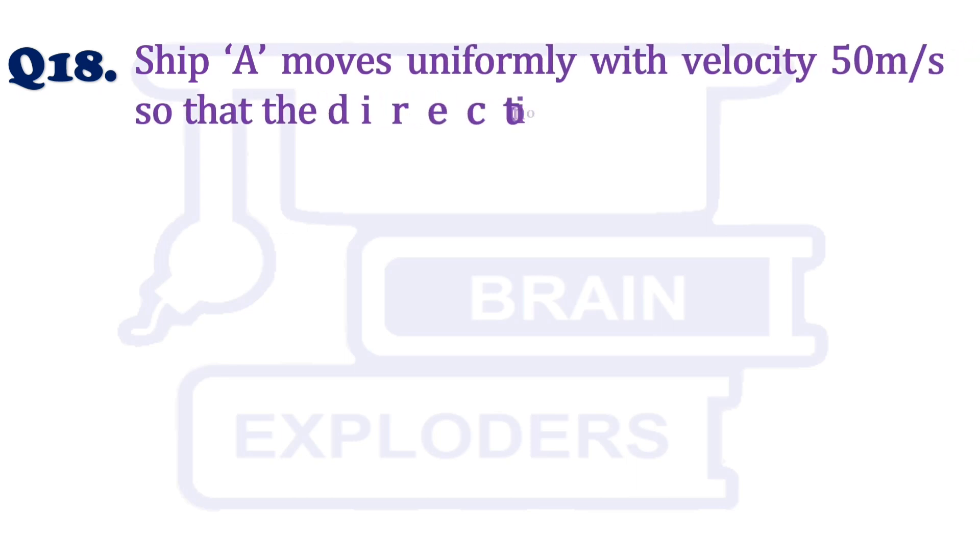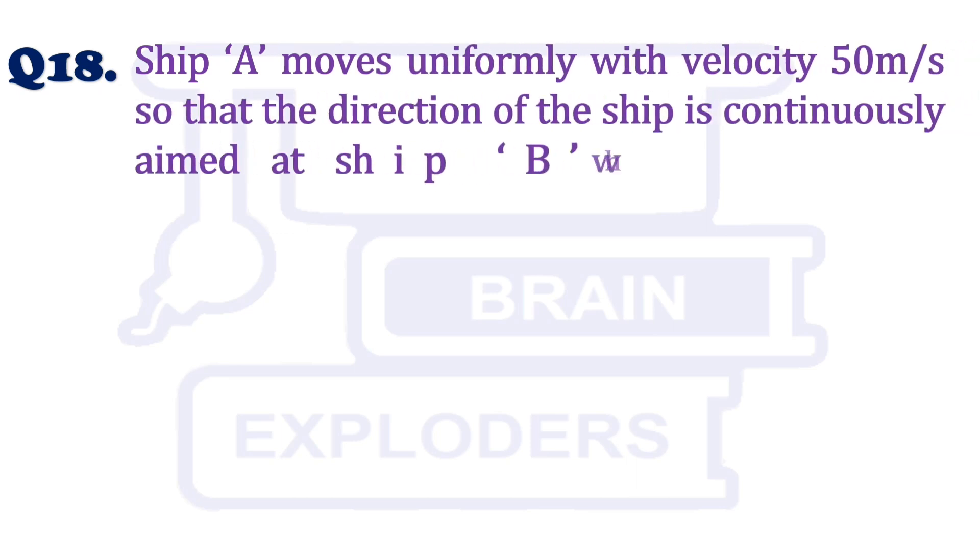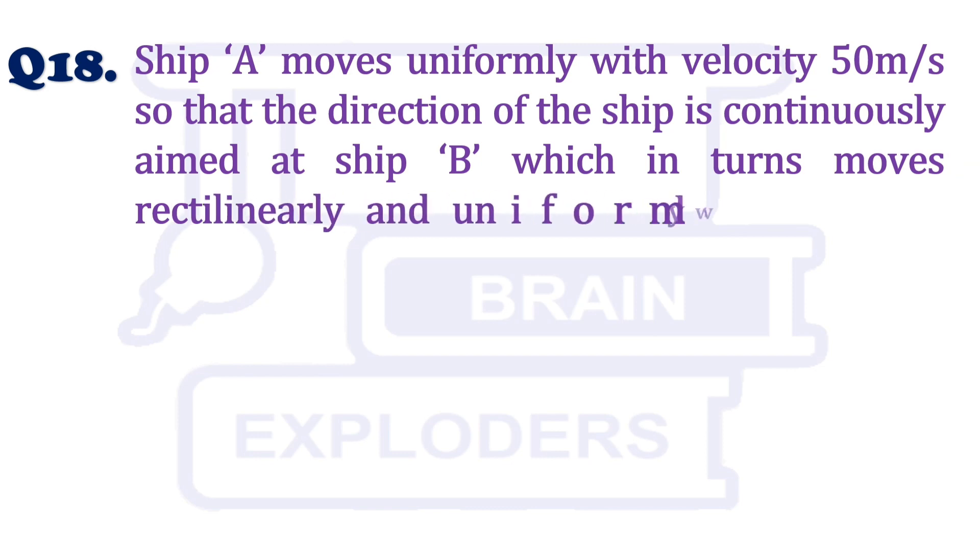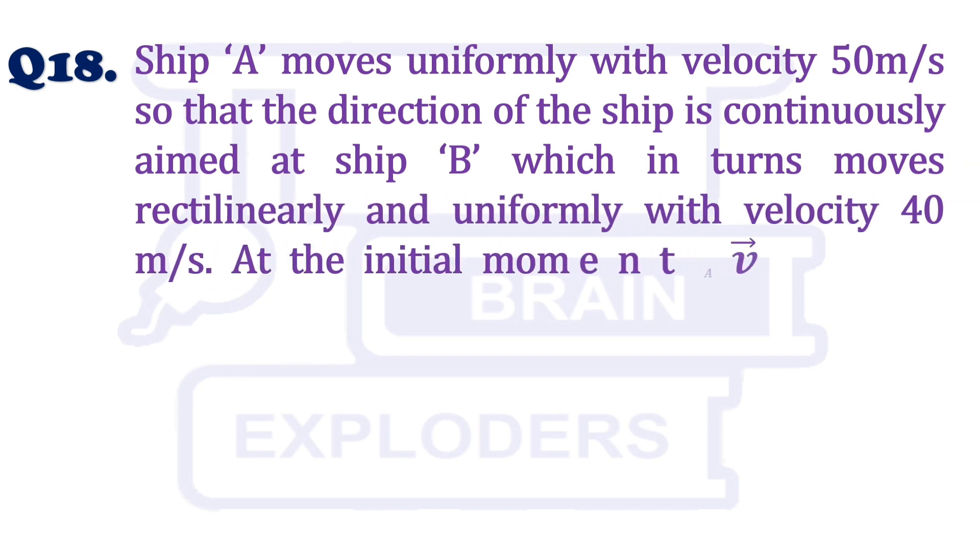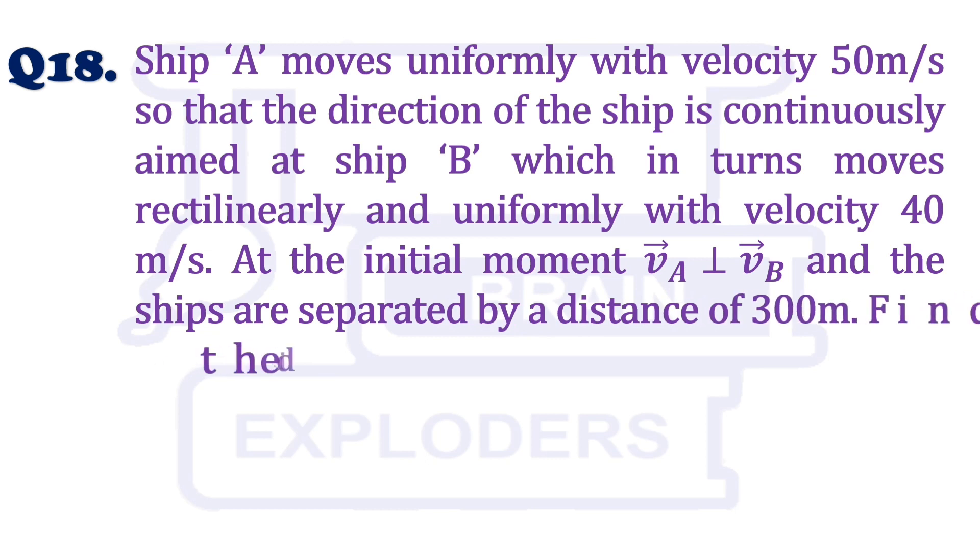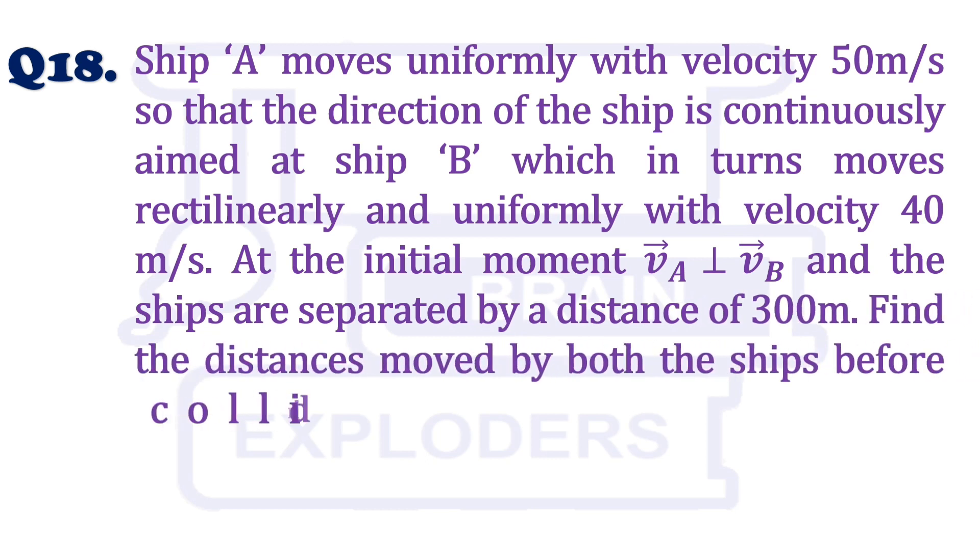Ship A moves uniformly with a speed of 50 m/s so that the direction of the ship is continuously aimed at ship B, which in turn moves rectilinearly and uniformly with velocity 40 m/s.